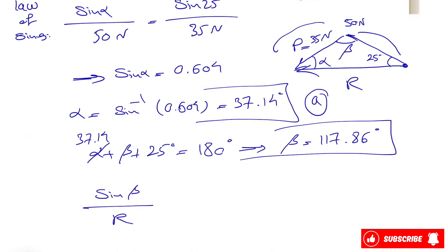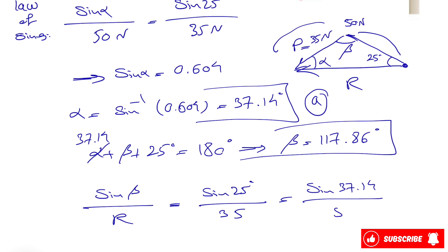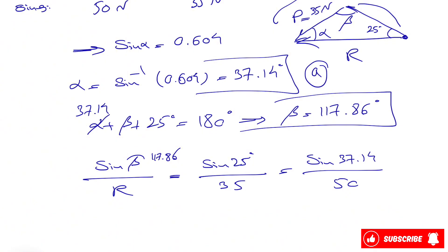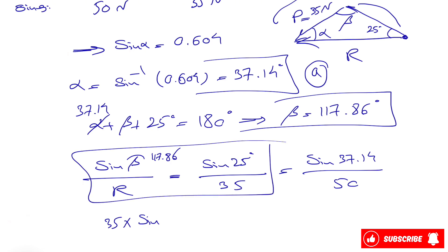Now we apply the law of sines again to find R. We have sine of beta over R equals sine of 25 degrees over 35. Using beta equal to 117.86 degrees: 35 times sine of 117.86 degrees equals R times sine of 25 degrees. From here we can find R, which equals 73.2 newtons.